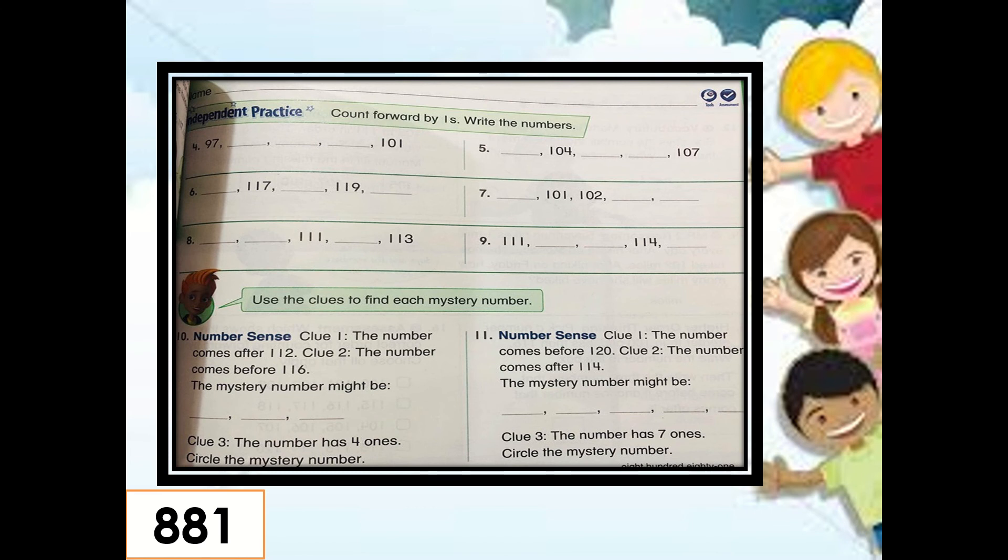Now, on page 881, I will let you do this alone. This is independent practice. So, from 4 to 9, it's the same thing. You will just count on. Count by 1 to get the missing number. And then, from 10 and 11, read the clues to find the correct answer or the missing number. I will give you time to do it. Afterwards, I will give you the correct answer and check if your answer is correct. Are you finished now? Very good. Let's check if your answer is correct.